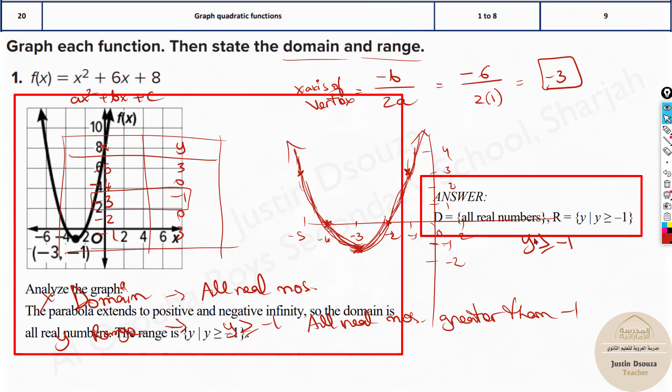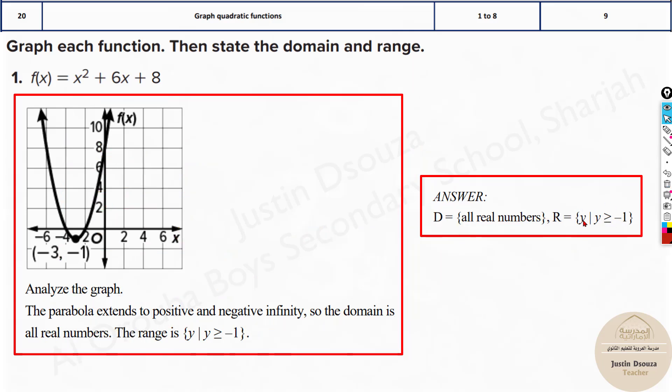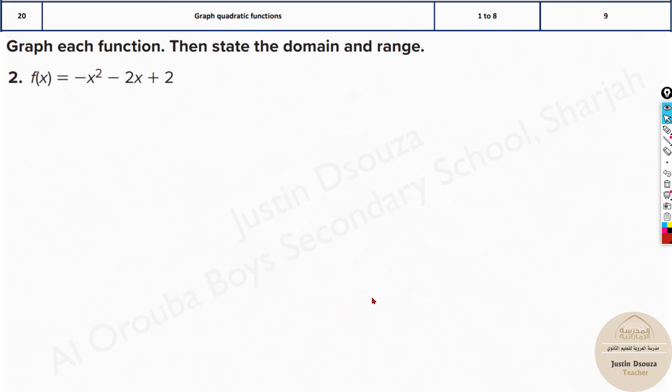And over here, domain is all real numbers, whereas range. See, now I told over here y is greater than or equal to negative 1. It can be written like this as well. It's the same thing. It's up to you. So it's written exam. So whatever you write, write it properly. It's fine. You'll get full marks.